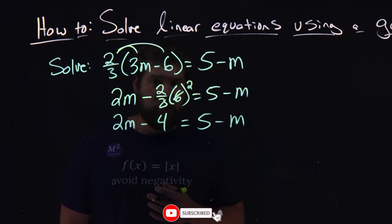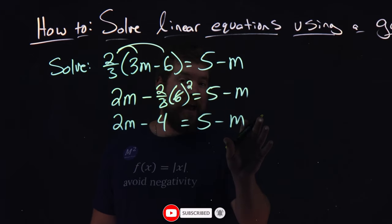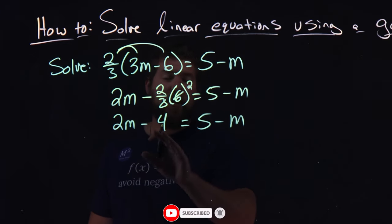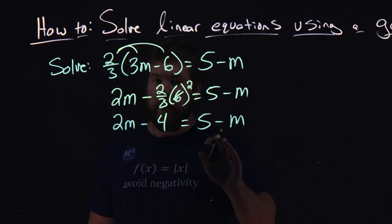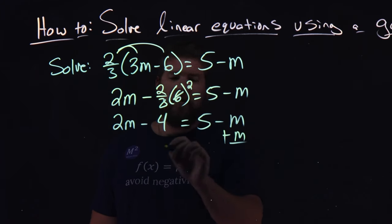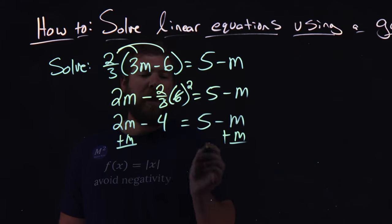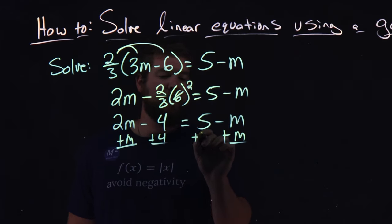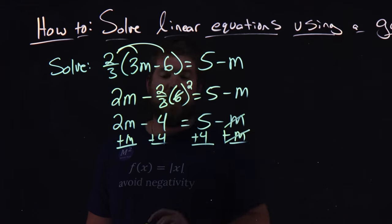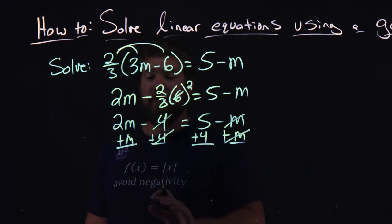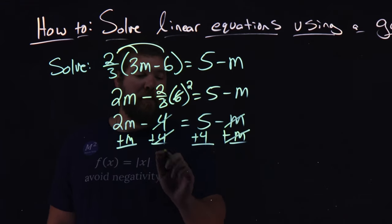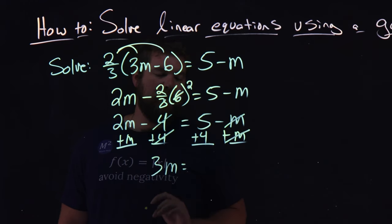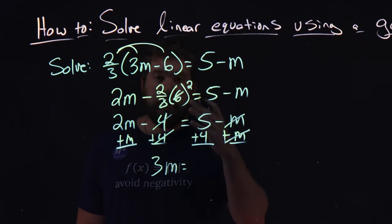Now we want to combine our like terms. So what I'm going to do is bring my m values to the left and my normal numbers to the right. I add an m here to both sides, and I'm going to add a 4 to both sides as well. These ms will cancel, and these 4s cancel. 2m plus 1m is 3m, and 5 plus 4 is 9.